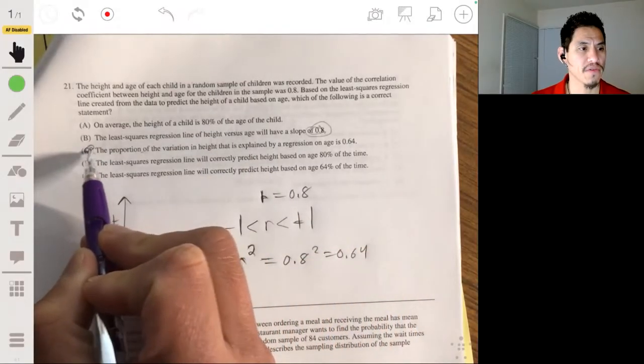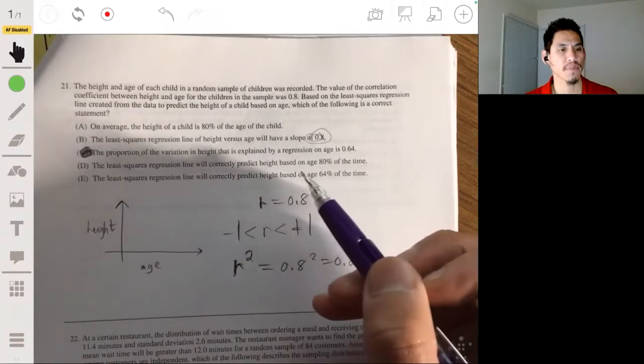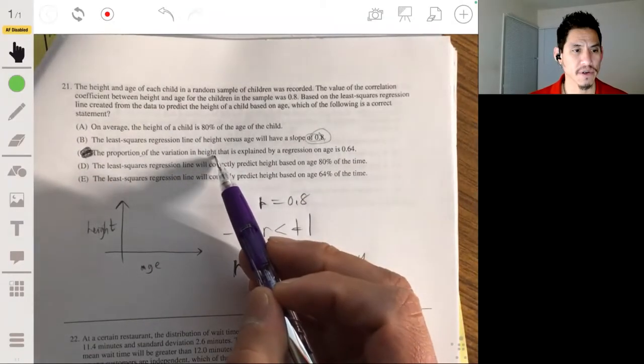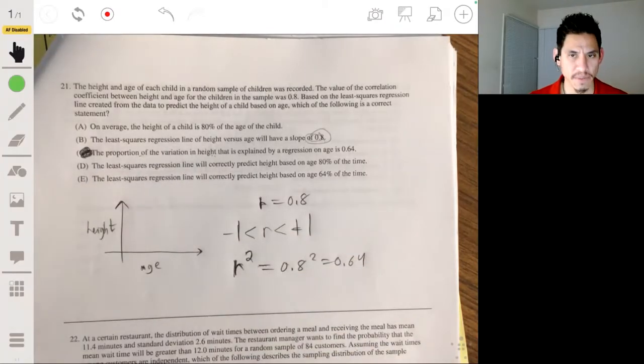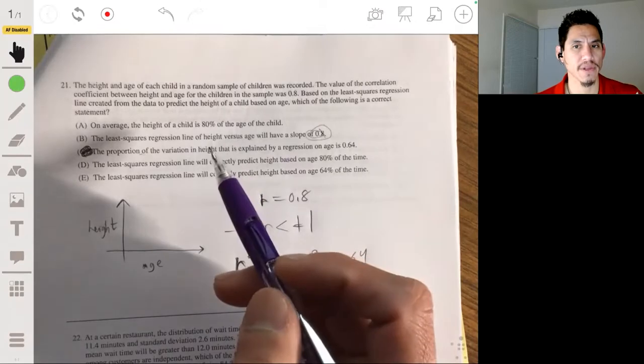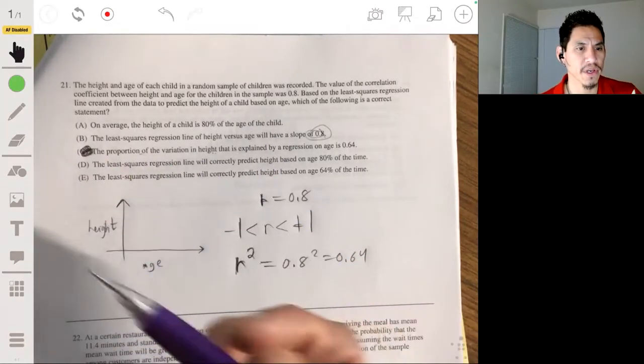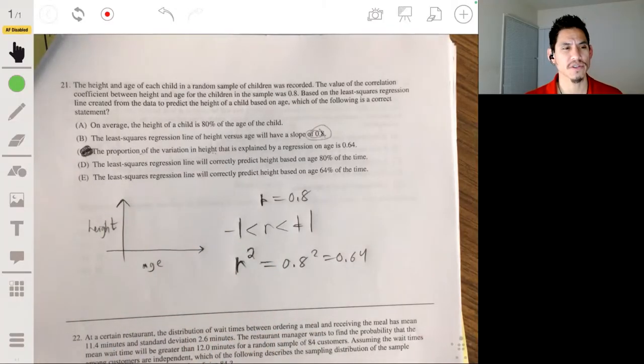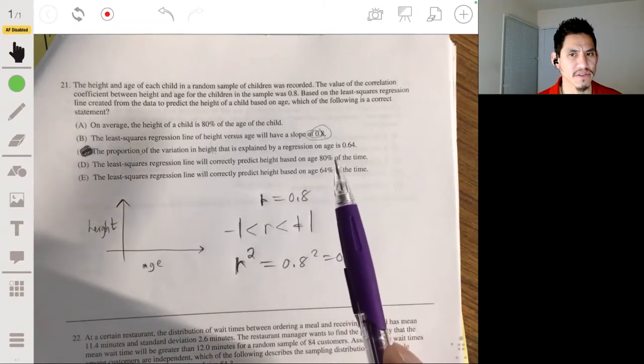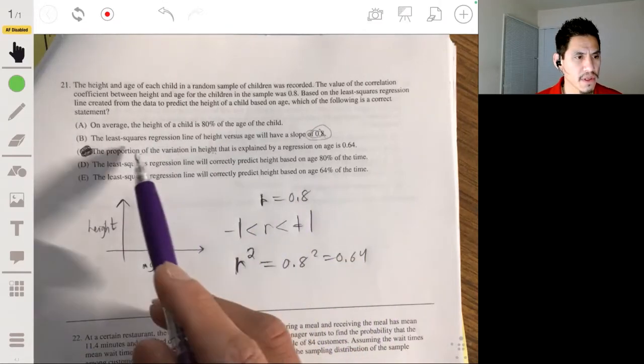And with that, so the coefficient of determination basically tells you the proportion of the variation in the response variable that was accounted for by the relationship relating the explanatory variable with the response variable. In other words, it's telling you how strong this line is in accounting for all the factors that are associated with height as you grow up, because obviously it's not just based on your age. It could be gender, heredity, diet, stuff like that, but there's a decent amount of strength. So it would be C.